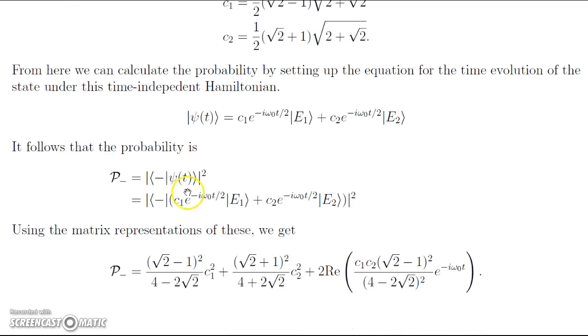To calculate the probability, we use the same process we've been doing this whole semester. We want to know what our spin down in the z direction is, so the probability of measuring the spin down is equal to the modulus squared of our spin down bra in product with our ket of ψ(t). We plug in ψ(t), which is this equation here. Then we can multiply through using the matrix representations.